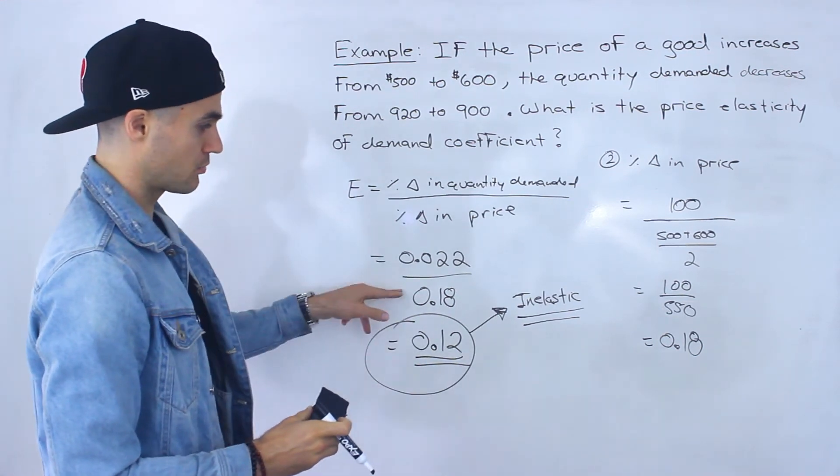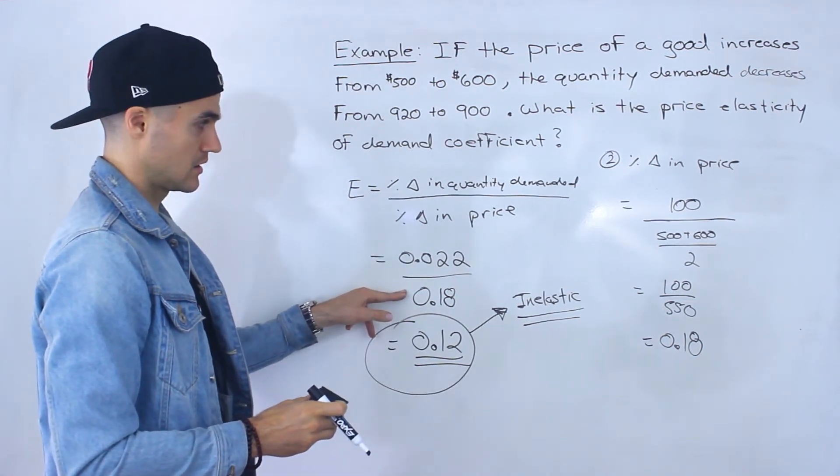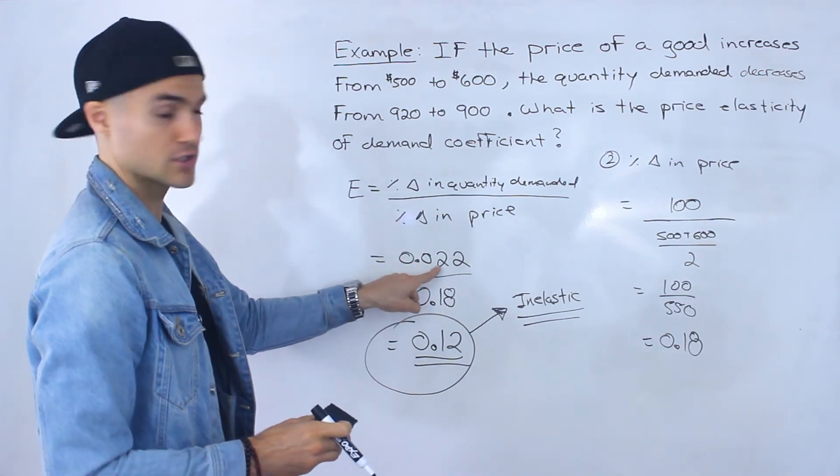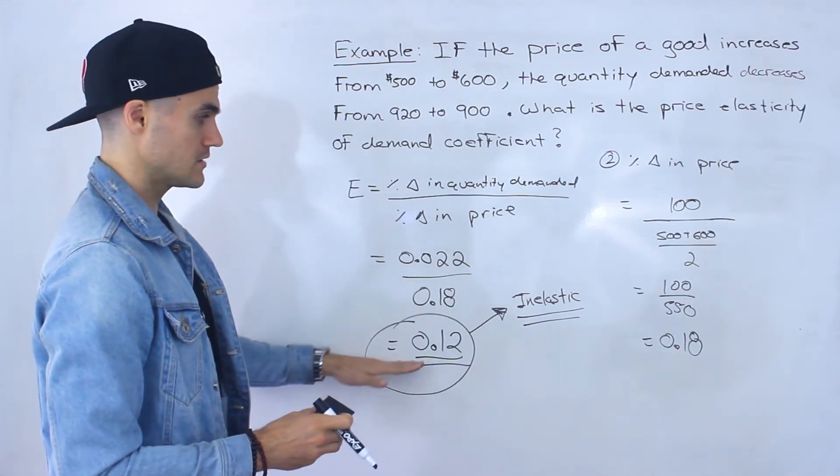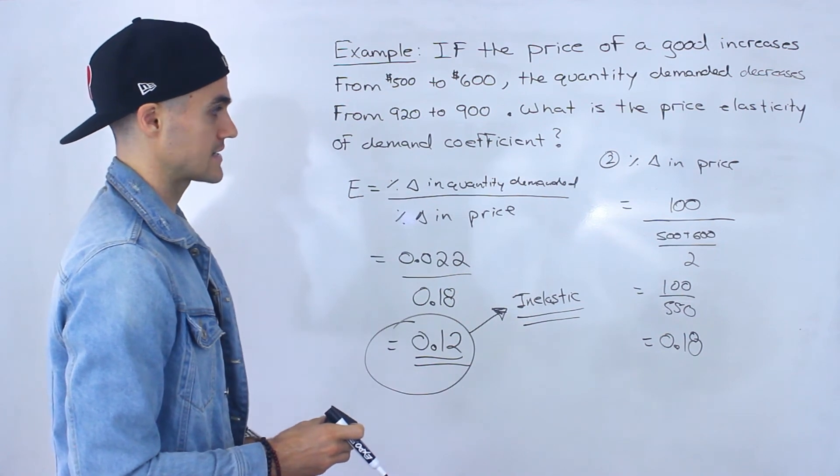So notice that the change in price was 18%. But the percentage change in quantity was only 2%. Okay, so it gets classified as inelastic.